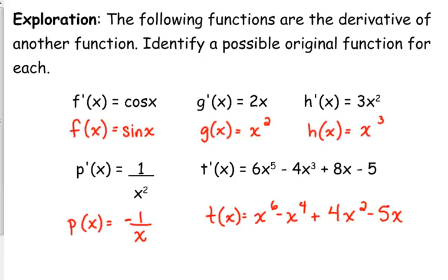This one we could rewrite as x to the negative 2, so you really do have to think about this one a little bit more. If you think back to when we took derivatives, the only way that x squared was going to end up in the bottom is if we started with an x in the bottom. It needs to be negative because this one is positive. So that function is negative x to the negative 1. If we apply our rules — bring down the exponent, negative 1 times negative 1 equals positive 1, subtract 1 from the exponent — that gives us x to the negative 2.